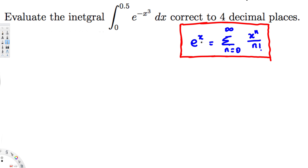Remember that e to the power of x in power series format looks like this. We can use this information to solve the problem. We know that e^x has this power series form, so now let's see how we can convert e to the power of negative x cubed into that pattern.